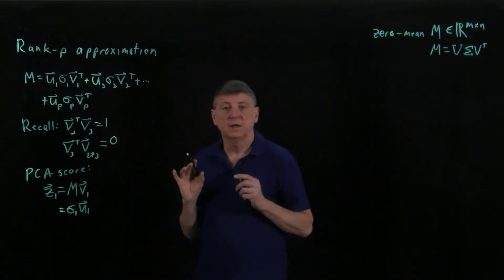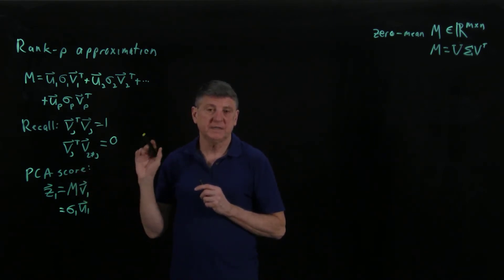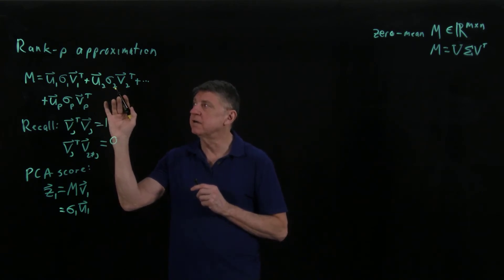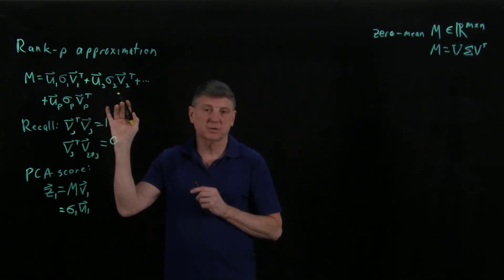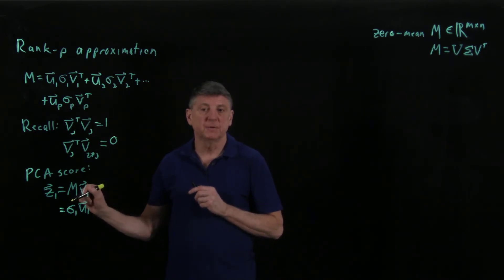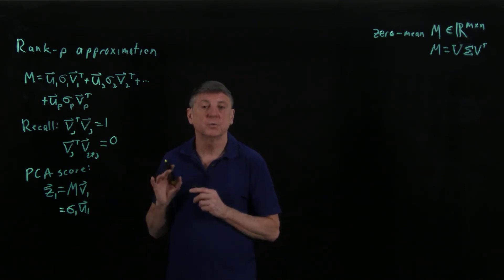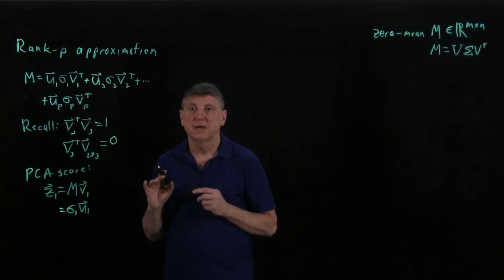And so, that means that our PCA score, if we think about PCA in terms of a matrix approximation, the first score in PCA is the first singular value of the SVD of our zero mean matrix times the first left singular vector. So, those are all the same.